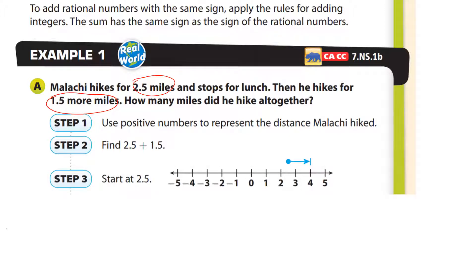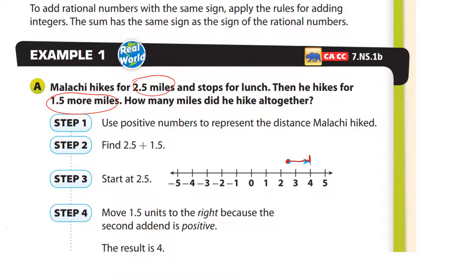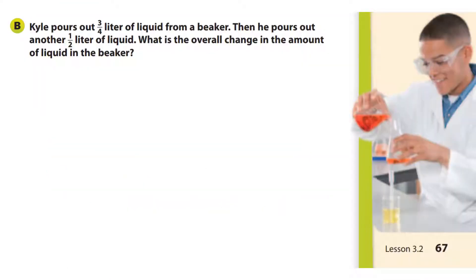He starts at 2.5 on the number line and moves 1.5 to the right — that's one and then 0.5 — so you end at four, moving right because it's positive. An addend is a number you're adding. The result is four: he hiked four miles.